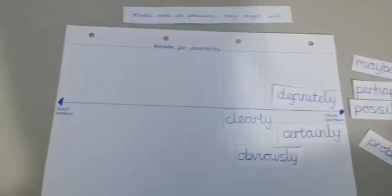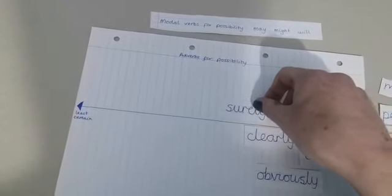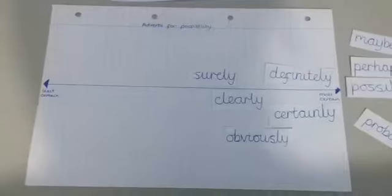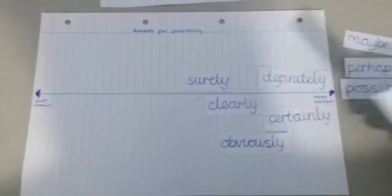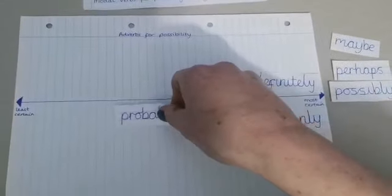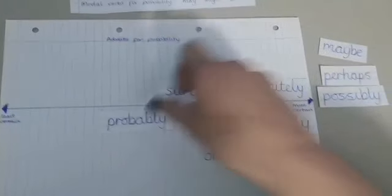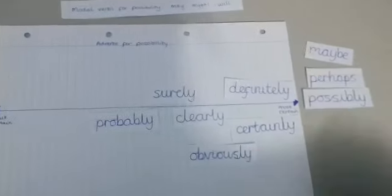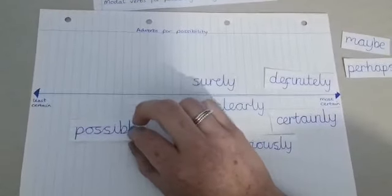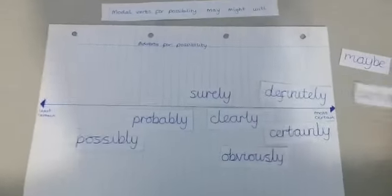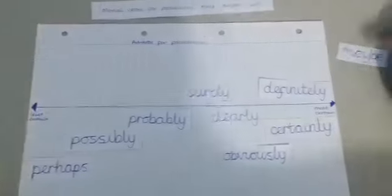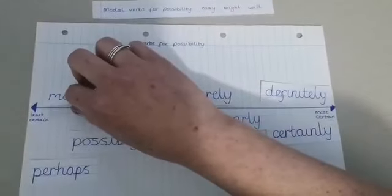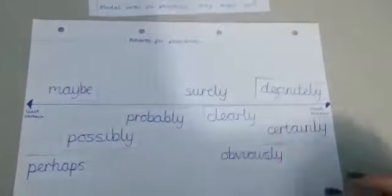Surely might be a little less certain. Something's probably going to happen — it sounds like they're not too sure whether it will. Something possibly may happen; I think that's a bit less likely. And maybe and perhaps are probably the least certain ones we've got there.